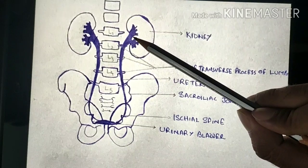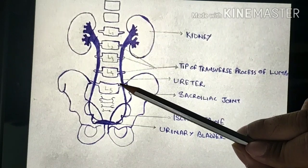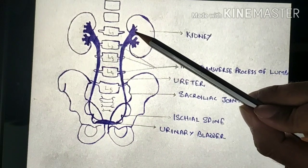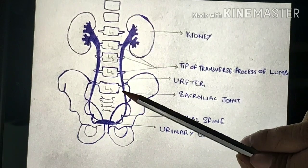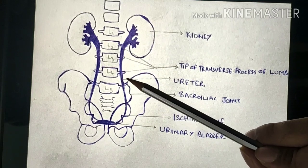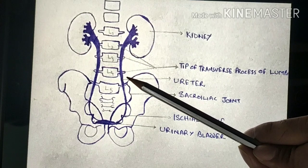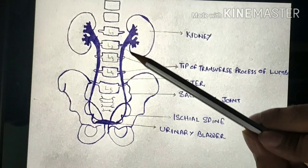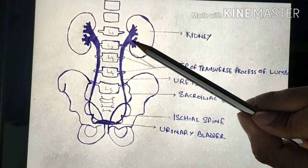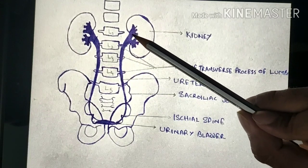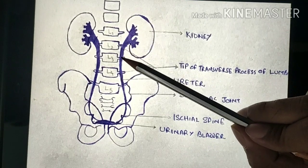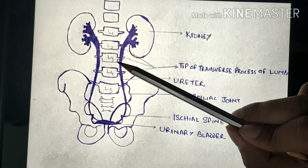The ureter can be divided into two parts: the abdominal part and the pelvic part. The abdominal part extends from the uretero-pelvic junction to the brim of the pelvis, where it crosses the common iliac or the beginning of the external iliac artery. It descends retroperitoneally, meaning it descends behind the peritoneum. It lies on the medial side of the psoas major muscle, which separates it from the transverse processes of the lumbar vertebrae.